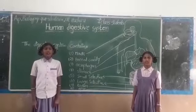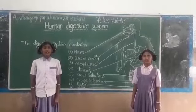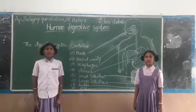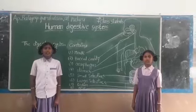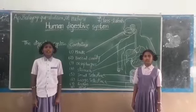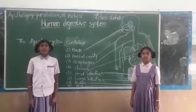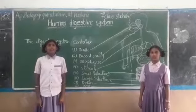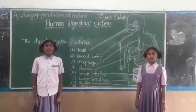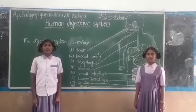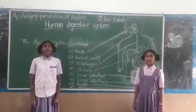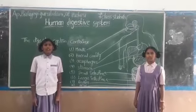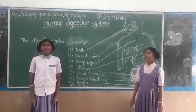The digestive system consists of alimentary canal and digestive glands. The total length of alimentary canal is about 9 meters. The main parts of the alimentary canal are: Mouth, Buccal cavity, Esophagus, Stomach, Duodenum, Small Intestine, Large Intestine, Rectum, and Anus.